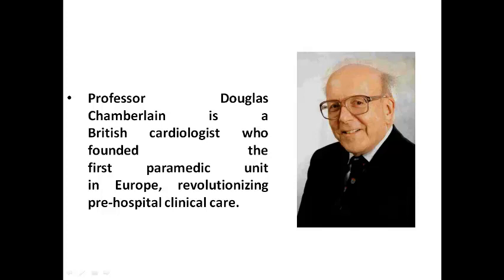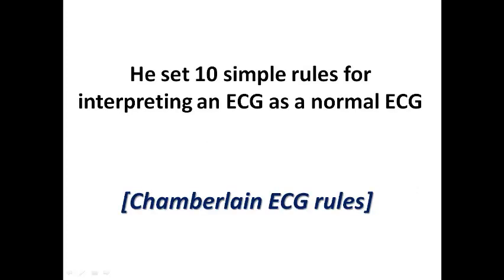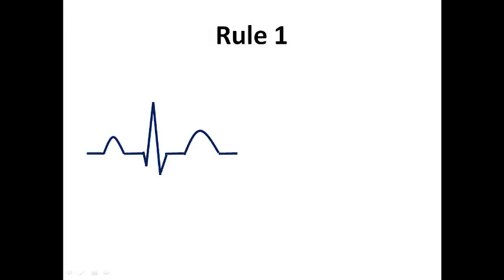So the Chamberlain ECG rules don't diagnose abnormality, they just tell you whether the ECG is normal or there is an abnormality that needs to be interpreted by another one. So they can be used not only by cardiologists but also by non-cardiologists, by paramedics for example, and by any healthcare workers apart from doctors. So what are these 10 simple rules for interpreting an ECG as a normal ECG?